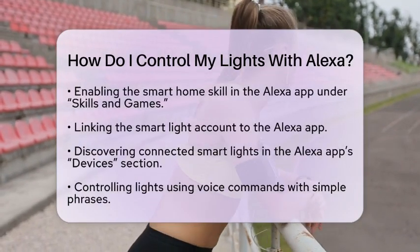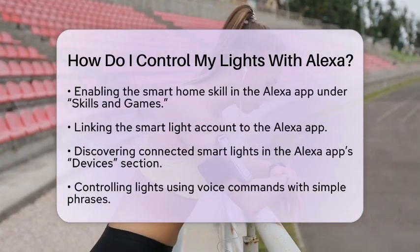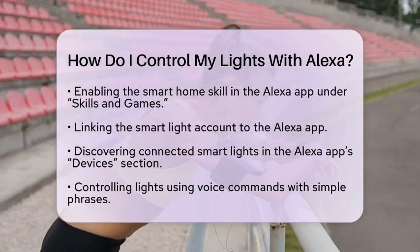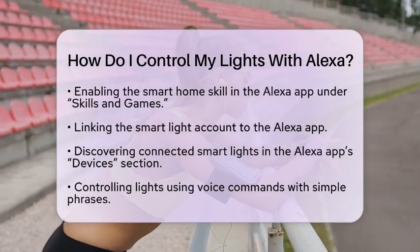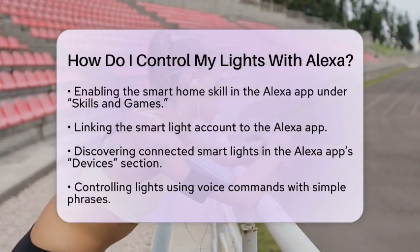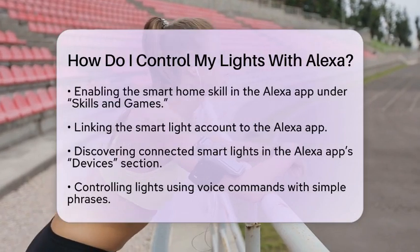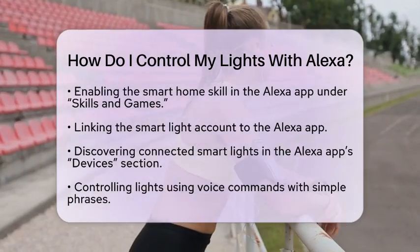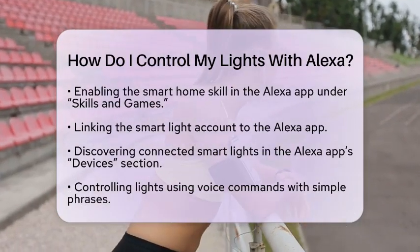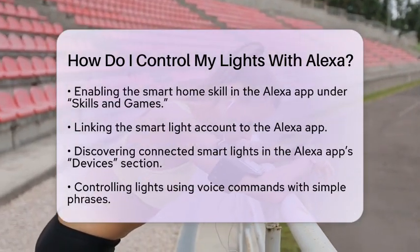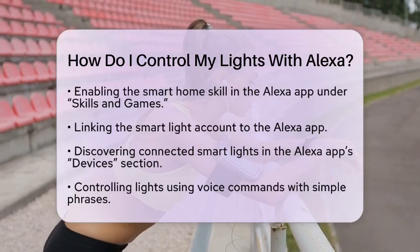Once you have linked your devices, it is time to discover them. In the Alexa app, go to the Devices section and select Add Device or Discover Devices. Alexa will scan and find your connected smart lights.